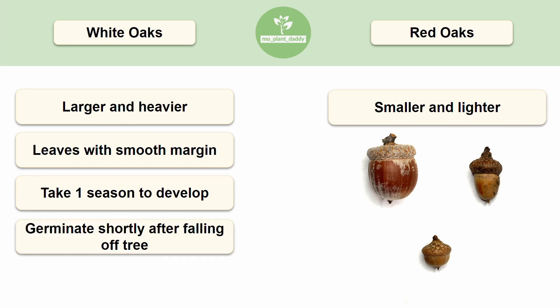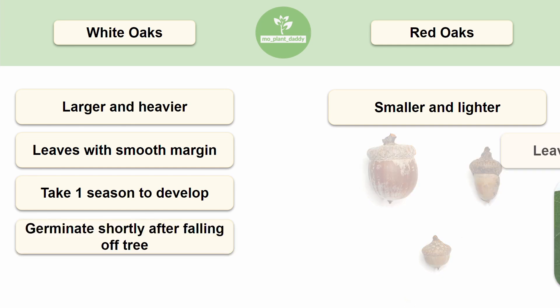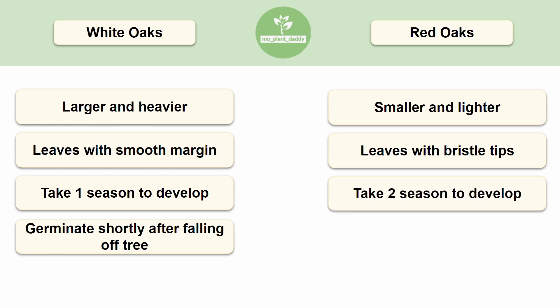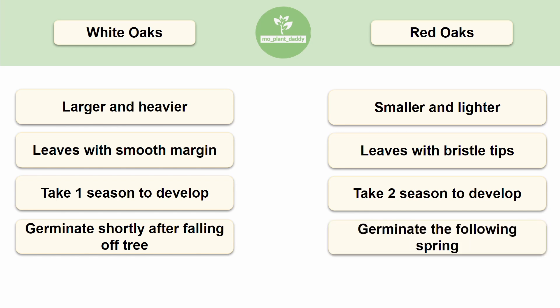Those acorns typically germinate shortly after falling off the tree, whereas red oaks produce leaves that have bristle tips, as well as acorns that take two seasons to grow instead of one. Their acorns typically germinate the following spring after falling from the tree.